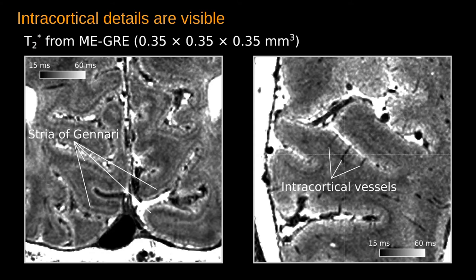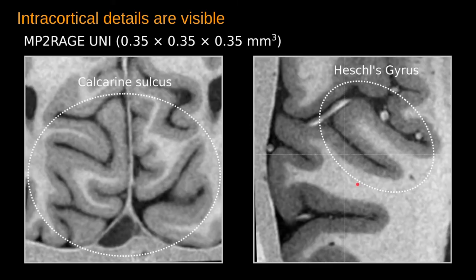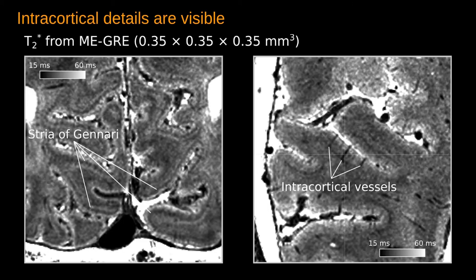Switching to T2 star values computed from multi-echo GRE, we can appreciate the Stria of Gennari showing up as a dark dip in the middle of the gray matter. Similarly, we can also see penetrating vessels within gray matter at this 0.35 mm isotropic resolution. Switching back and forth between the uni-contrast and the T2 star images gives you the amount of intracortical detail.